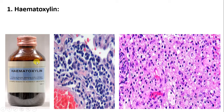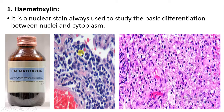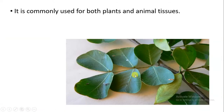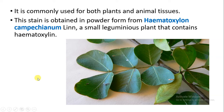First, let us discuss hematoxylin. Hematoxylin is a nuclear stain. It is always used to study the basic differentiation between the nucleus and cytoplasm — it can easily stain the nucleus, allowing us to distinguish between the cytoplasm and the nucleus. It is commonly used for both plant and animal tissue. Hematoxylin is obtained from the plant Haematoxylon campechianum, which is a small leguminous plant belonging to the Fabaceae (Pulse) family.